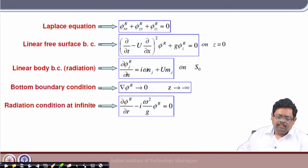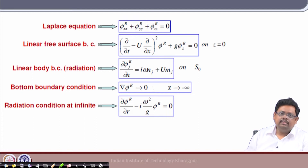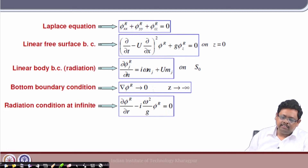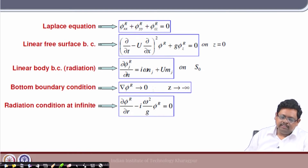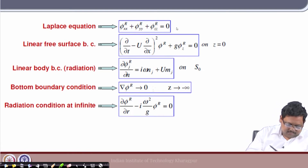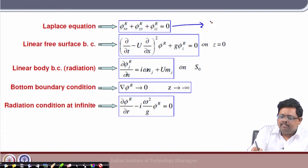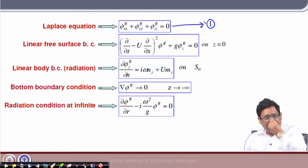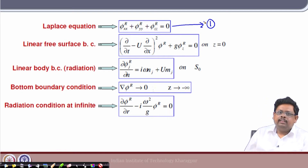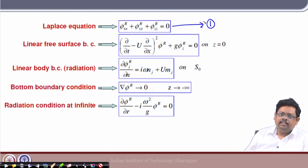If I write a differential equation for the radiation problem, phi has to satisfy the Laplace equation — that is equation 1. So phi must satisfy this Laplace equation, which we call equation 1. And then it must also satisfy the linear free surface boundary condition.